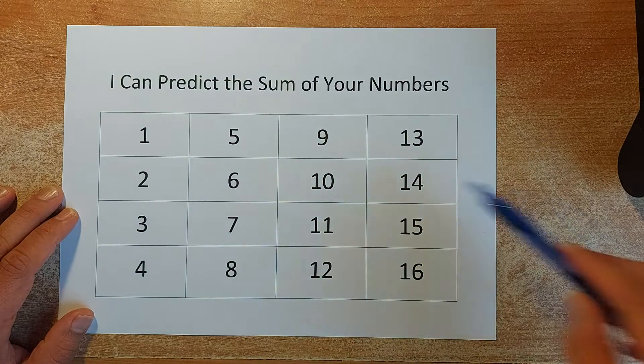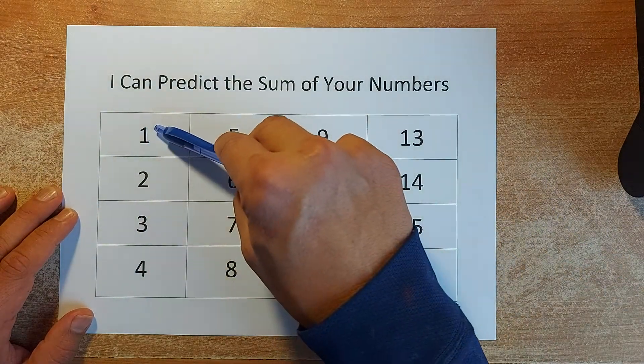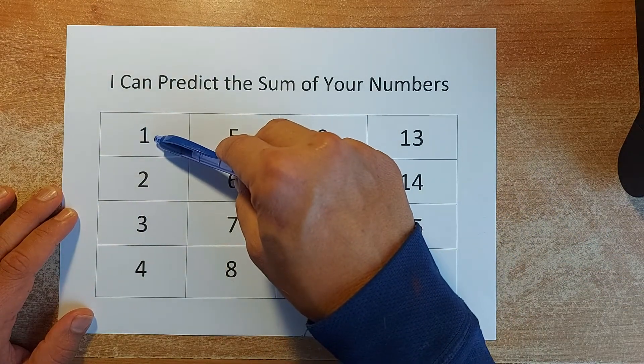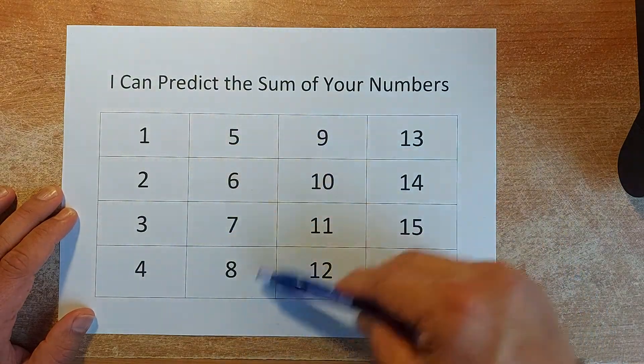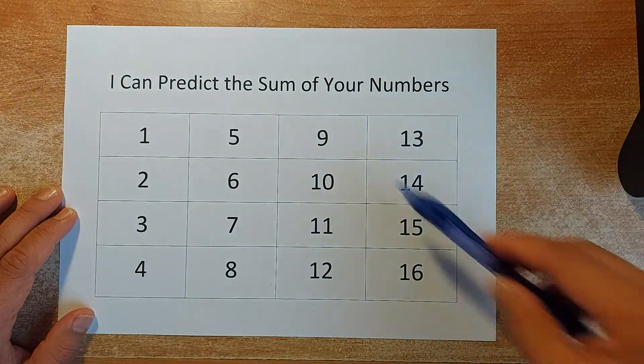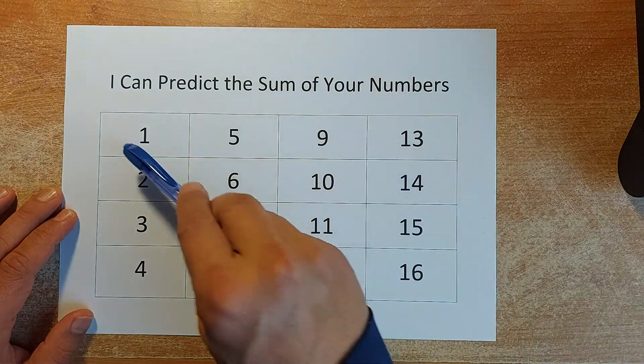Okay, so we have a grid of 16 numbers in order. 1 to 4, 5 to 8, 9 to 12, 13 to 16. There's no missing number there. So the number is from 1 to 16.